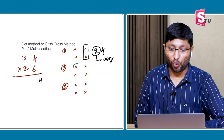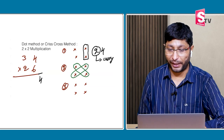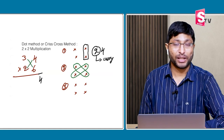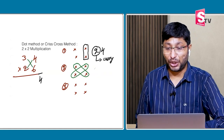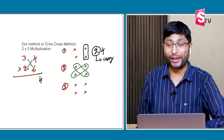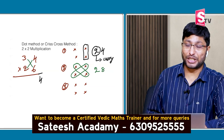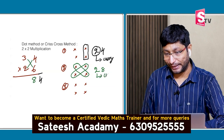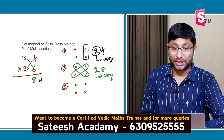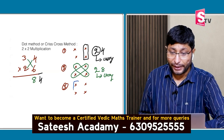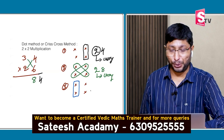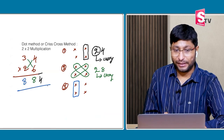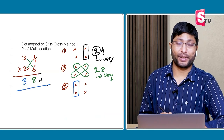Step 2: ones place into tens place and ones place into tens place. 6 threes are 18, and 4 twos are 8. 8 plus 18 is 26, plus 2 carry is 28. Write down the 8, and 2 will be carry. Step 3: tens place into tens place — 3 into 2 is 6, plus 2 carry is 8. The answer is 884.